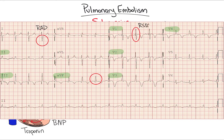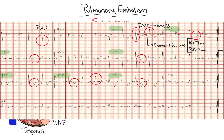Next, there is an RSR' pattern in V1 indicating right bundle branch block. In addition, a dominant R wave in V1, meaning greater than 7 mm tall or an R-to-S ratio greater than 1, indicates RV dilation or hypertrophy. Next, there is the classic RV strain pattern of T wave inversions in V1 through V4 and 2, 3, and AVF. Finally, there is an S1, Q3, T3 pattern, classically associated with PE, though this sign is neither sensitive nor specific.